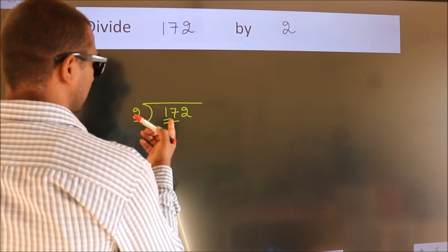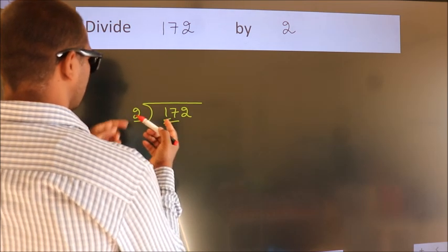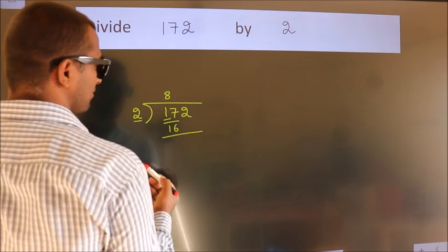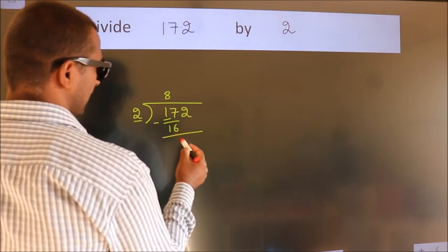A number close to 17 in 2 table is 2 times 8 equals 16. Now we should subtract. We get 1.